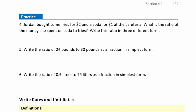Question four. Jordan bought some fries for $2 and a soda for $1 at the cafeteria. Write the ratio of the money he spent on soda to fries in three forms. So we want to make sure we put the soda first, even though they were listed backwards up here. Notice this is telling us right here how we want these ratios written, soda to fries. So it's 1 to 2, 1 to 2, or 1 to 2 as a fraction.